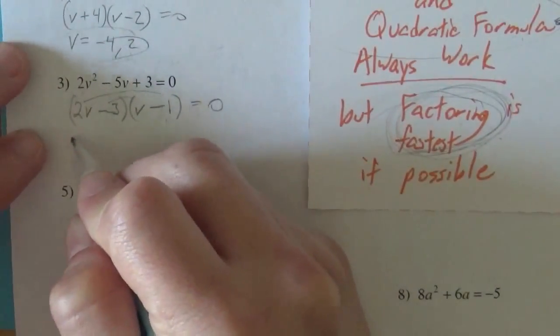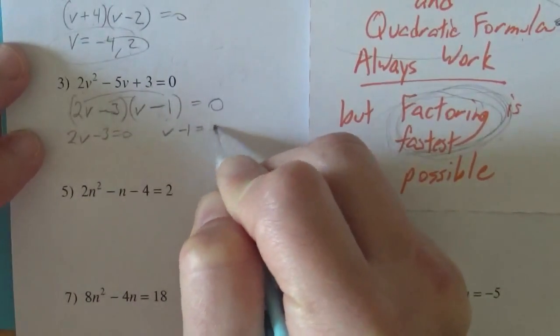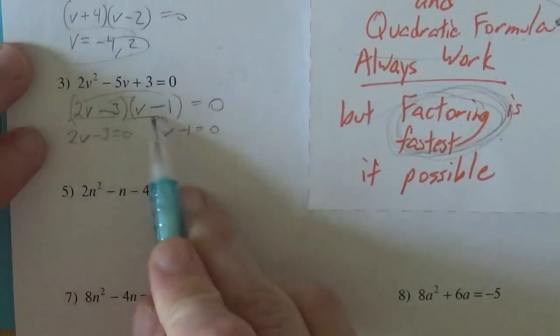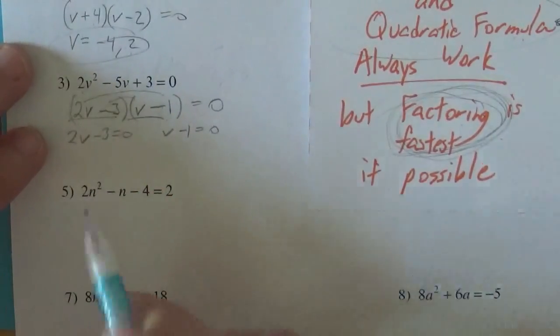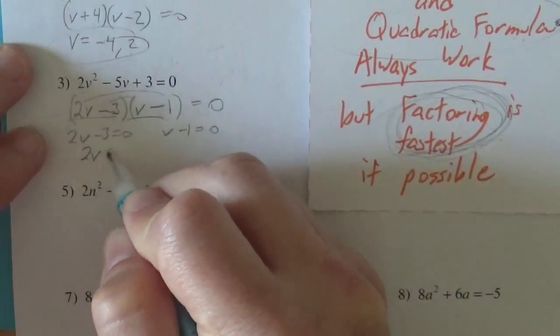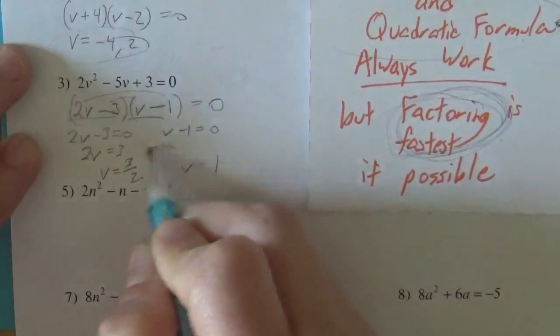So either 2v - 3 = 0 or v - 1 = 0 by our zero product property. It's two things that are multiplying together. One of those factors has to equal 0 if they have to multiply to make 0. So 2v = 3, so v is 3/2, or v is 1 from that one.